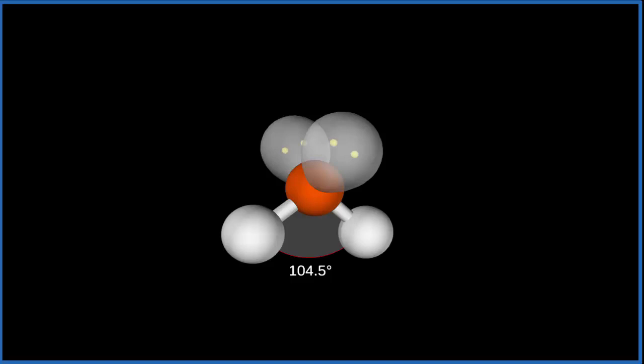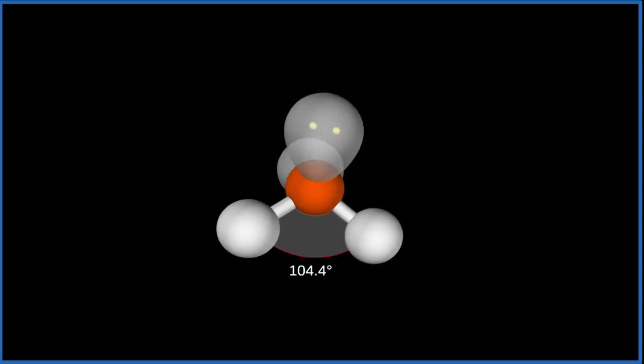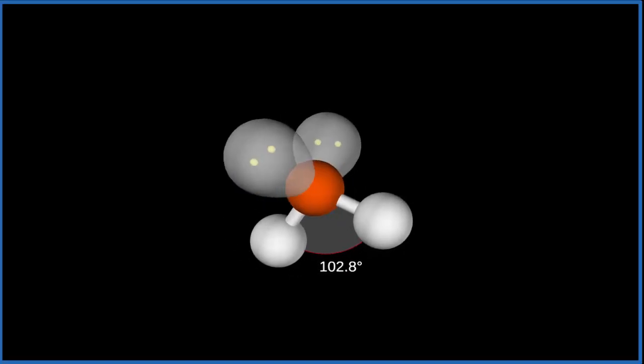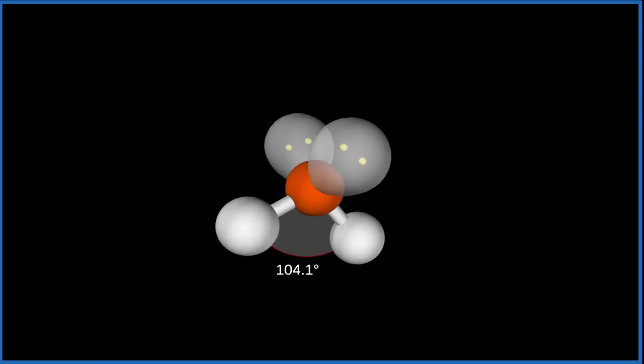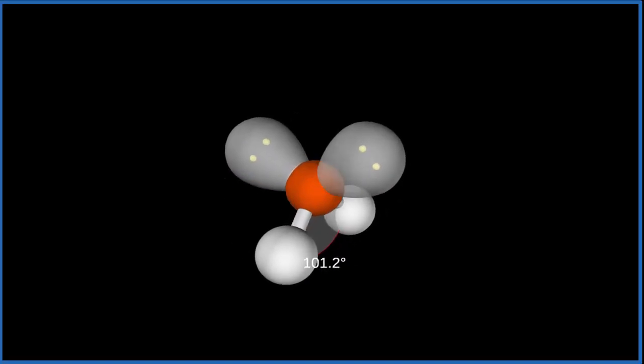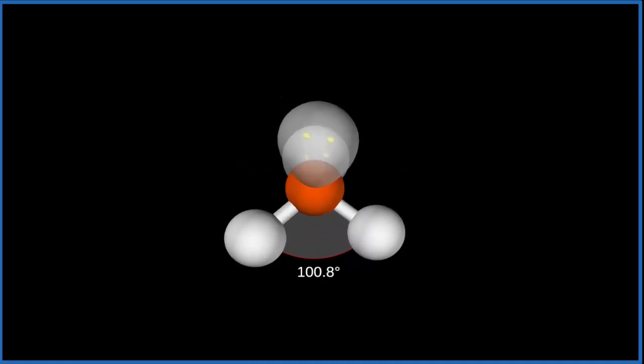So the bond angle for H2O is less than 109.5. And that's because when we look at lone pairs, like these lone pairs on the top, they actually repel more than these hydrogen atoms. They repel a little bit more. Since these two on top are repelling a little bit more, that pushes the two hydrogen atoms down here closer together.